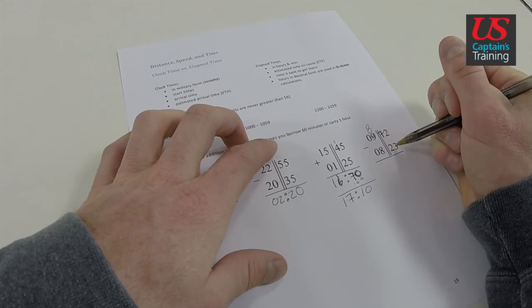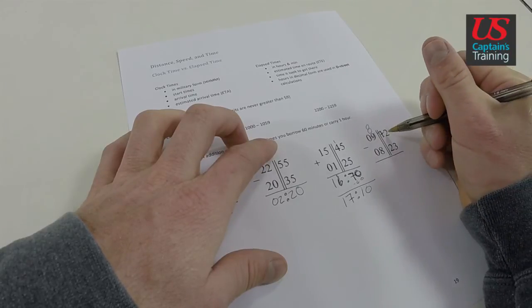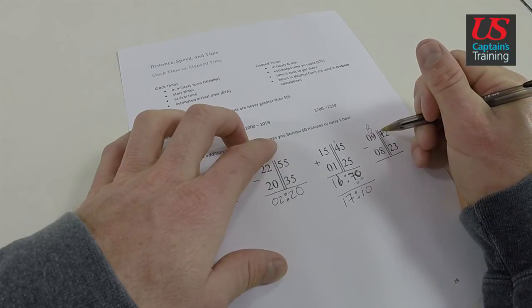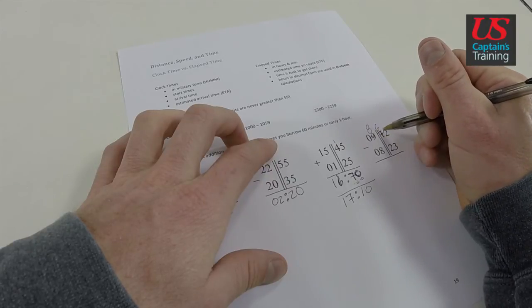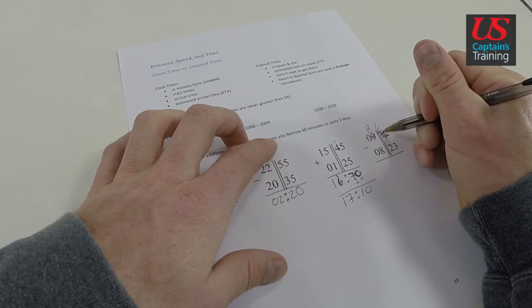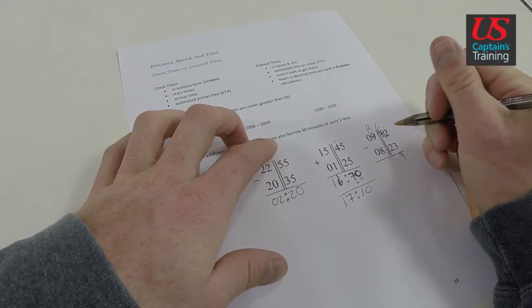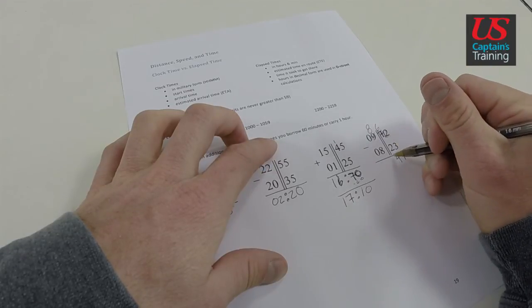And now we can do 23. We can do 72 minus 23. So 2 minus 3. You'll notice we need to borrow. And this is just normal. So this 7, we borrowed 10 from here. And so this becomes a 12. And this becomes a 6. 12 minus 3 is 9. 6 minus 2. Is 4.